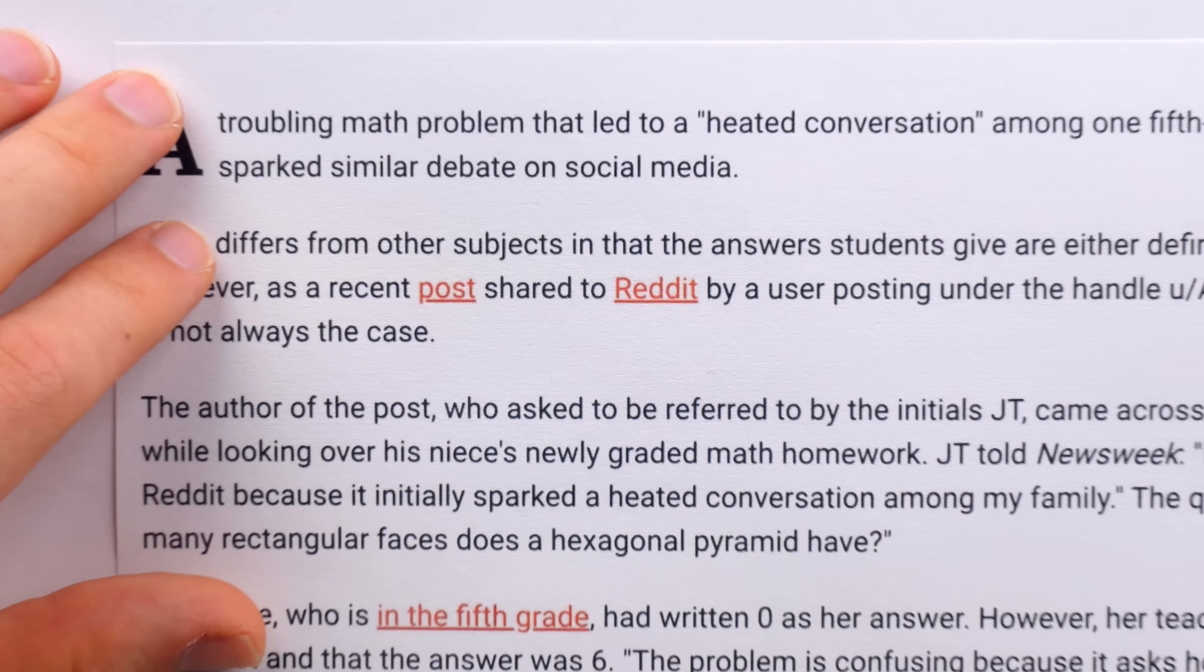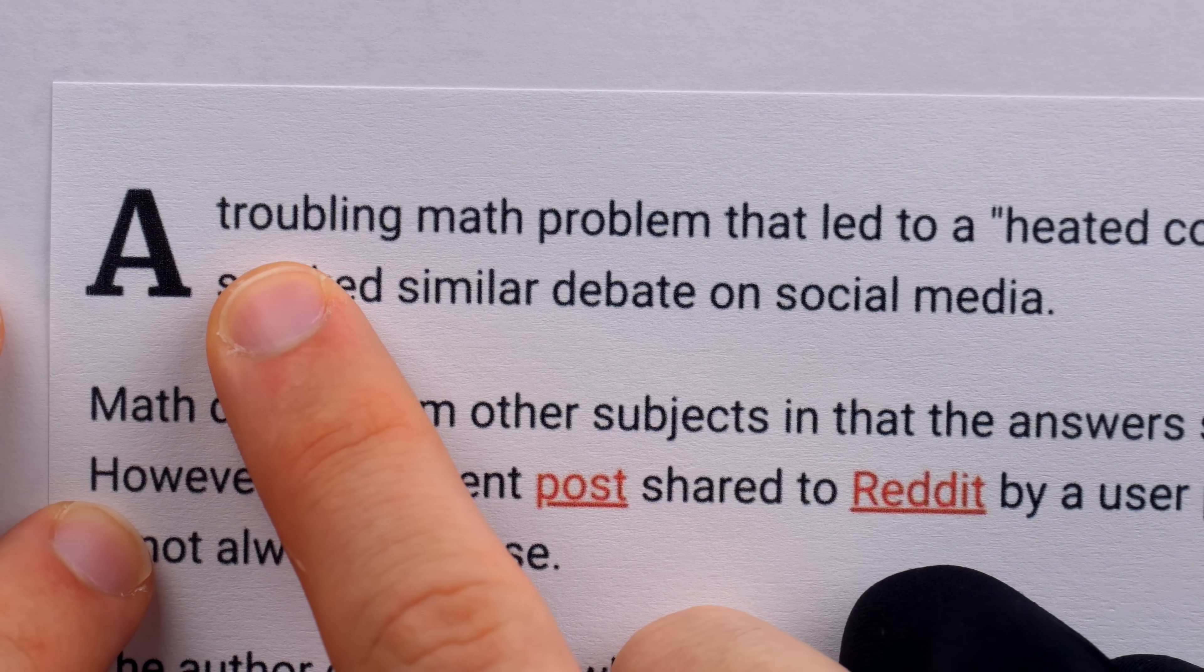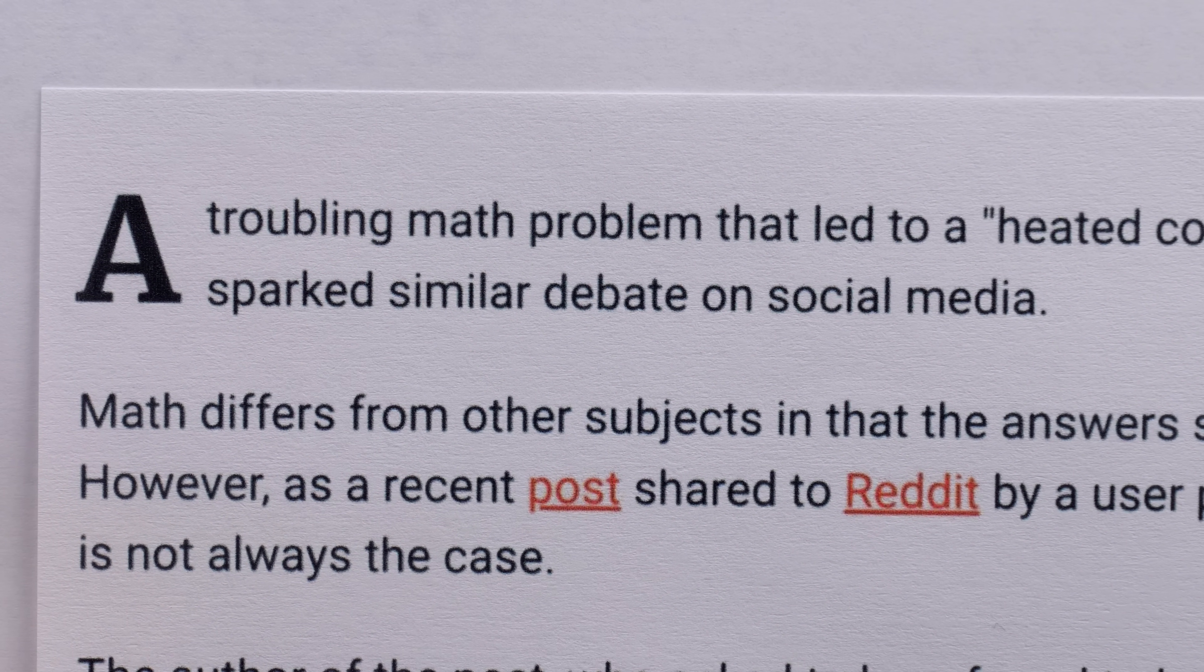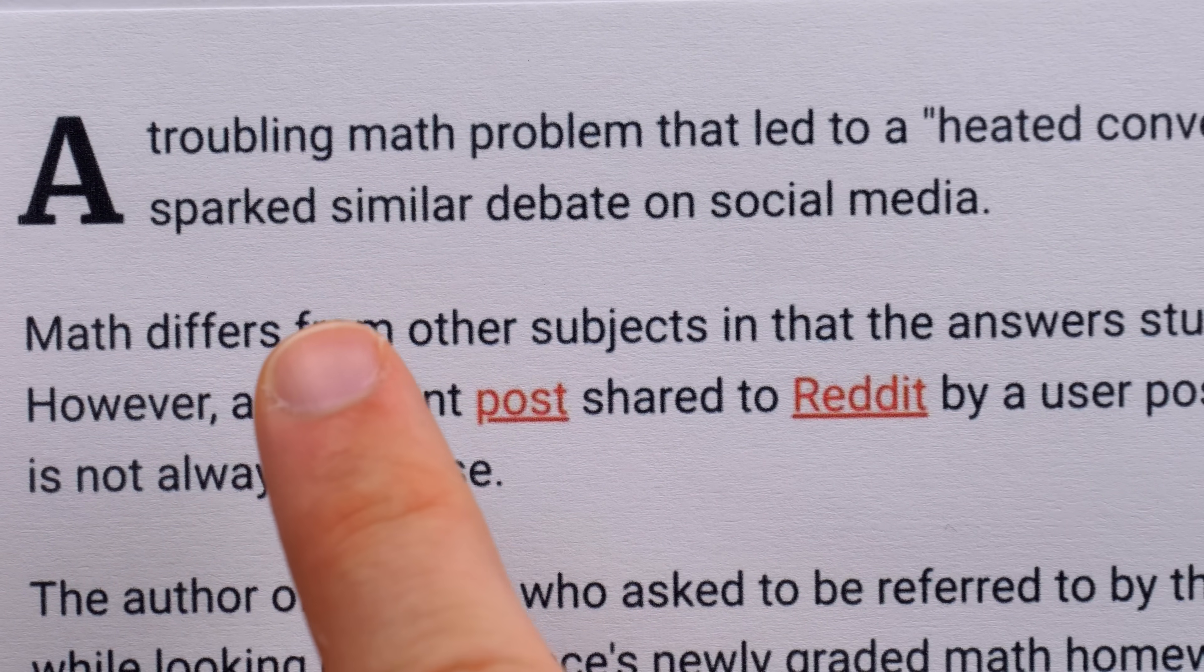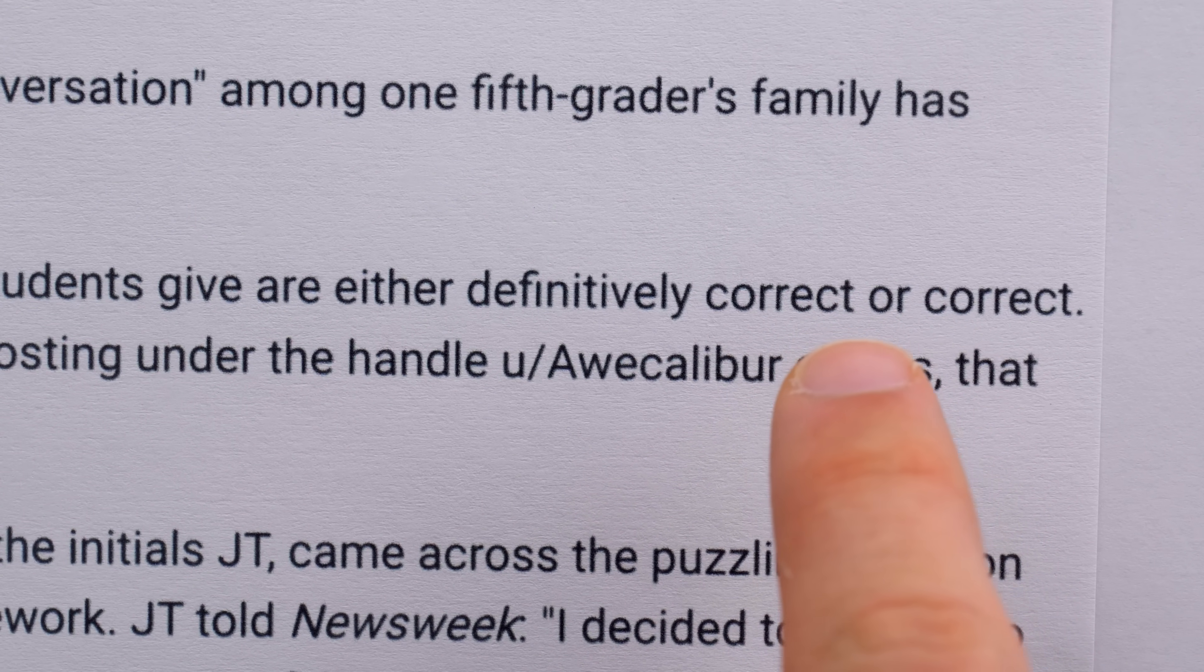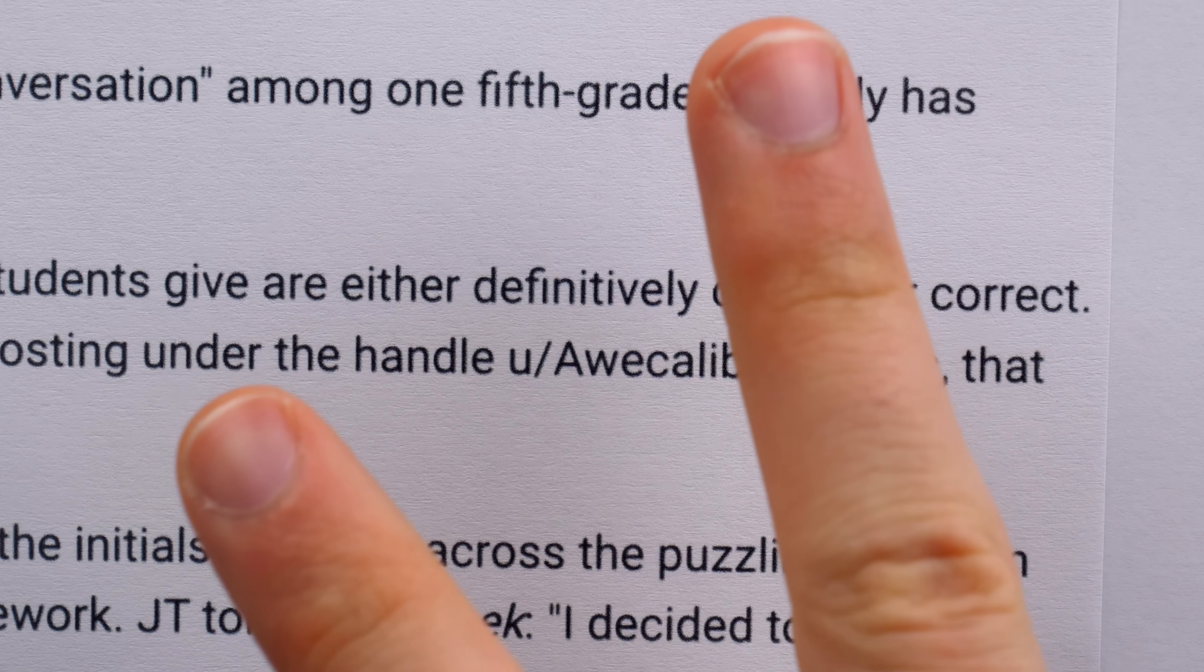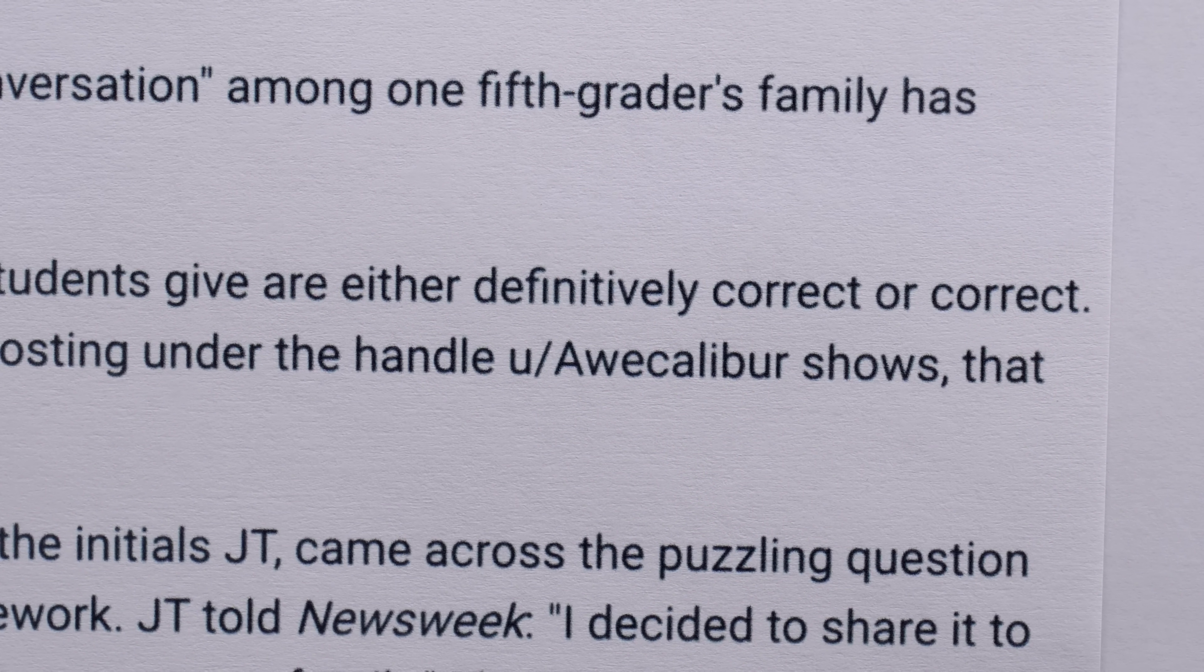Going back to the Newsweek article, I'd like to nitpick just a little bit. It begins referring to the math problem as troubling, and I don't know if I'd go that far. I mean, it's a little odd because the correct answer is zero, but I wouldn't say it's troubling. Sure, it's a little odd to ask 5th graders to count something that's not there, but if this is troubling, then trouble's easier to find than I thought. They go on to say that math differs from other subjects, and that the answers students give are either definitively correct or correct. But the author's forgetting the other two possibilities of incorrect and definitively incorrect. So, small error there.